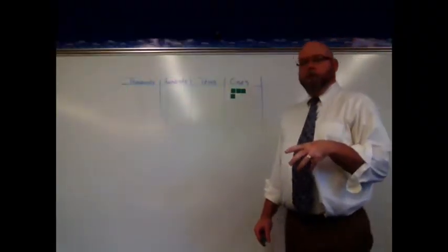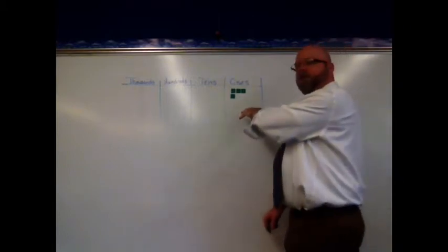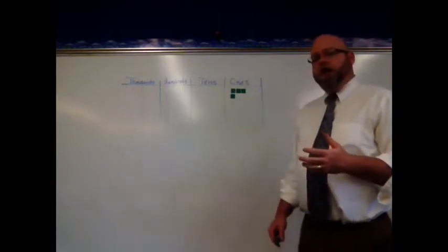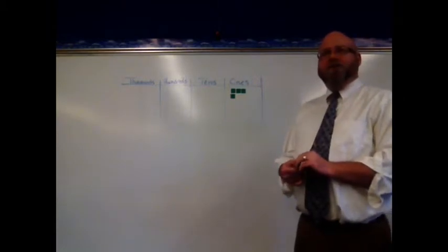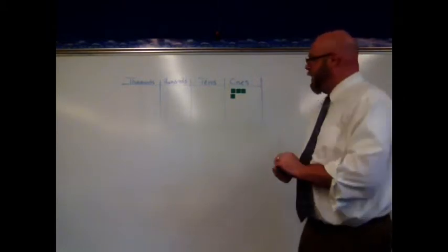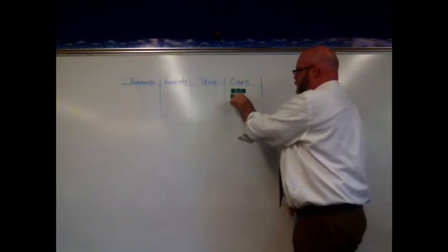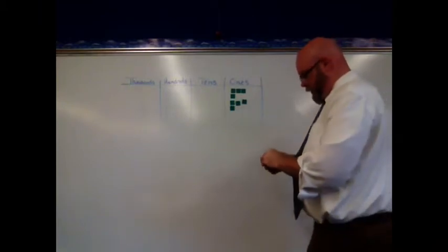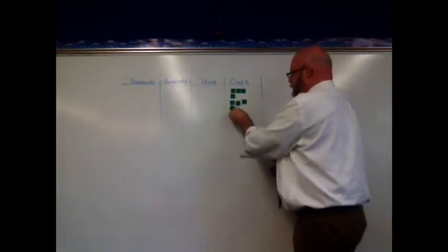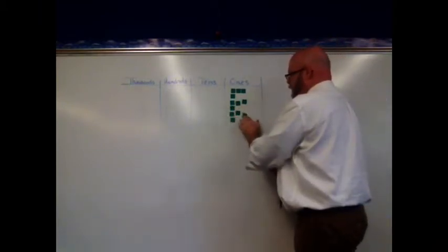Today we want to look at what happens when we multiply. Let's say I've got four ones, and I want to multiply those four ones times three. Well, what I'm really doing is counting by fours three times. Four, eight, and twelve.